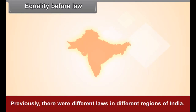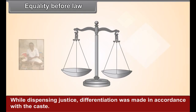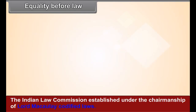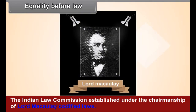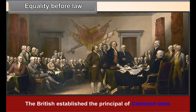Equality before law. Previously, there were different laws in different regions of India. While dispensing justice, differentiation was made in accordance with the caste. The Indian Law Commission, established under the chairmanship of Lord Macaulay, codified laws. These codified laws were applied uniformly all over India. The British established the principle of common law.